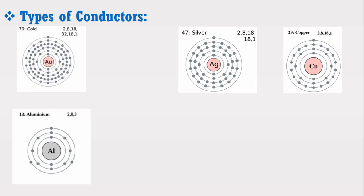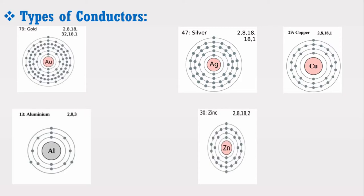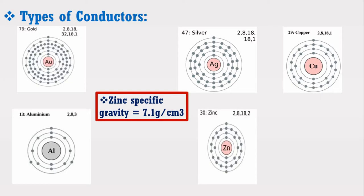A question may arise: is there any element that has two electrons in its outer shell? Two electrons in the outer shell means it will have higher conductivity than aluminum which has three electrons. The answer is yes — there exist some elements with two electrons in their outer shell. For example, zinc has two electrons in the outer shell. However, it is not used in transmission lines because the specific gravity of zinc is very high, almost 7.1 grams per centimeter cube. Due to this high specific gravity, its weight will be very high, which requires poles and towers of greater strength to carry its weight, further increasing the total cost of the transmission line. Therefore, zinc is not used in the transmission line.